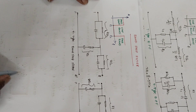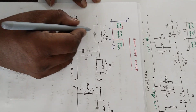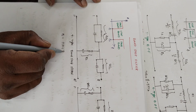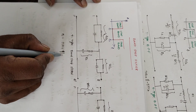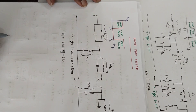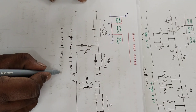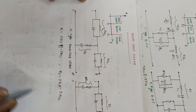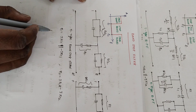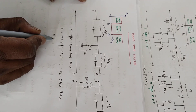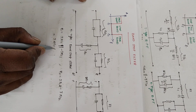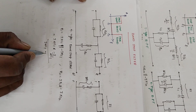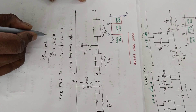Z1 is the parallel combination of jXL1 in parallel with minus jXC1. So Z1 equals j·ωL1 times (minus j divided by ωC1), all divided by (j·ωL1 minus j divided by ωC1). This is the value of Z1 for the parallel resonant branch.